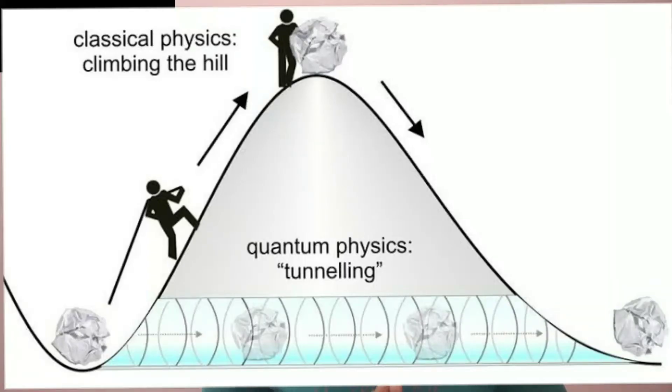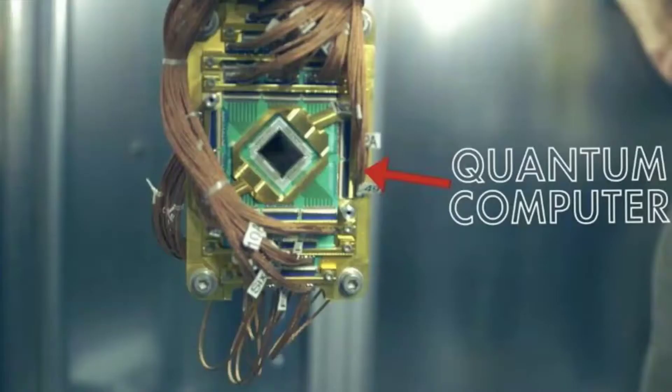So quantum tunneling — blocking the electrons' passage creates a processing difference. This leads us to quantum physics.